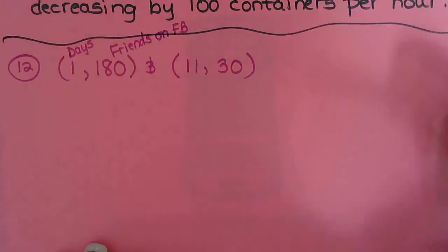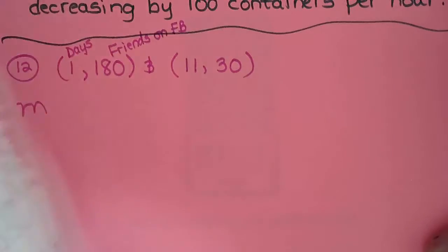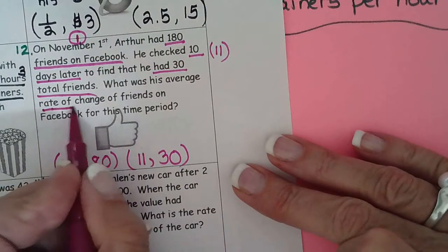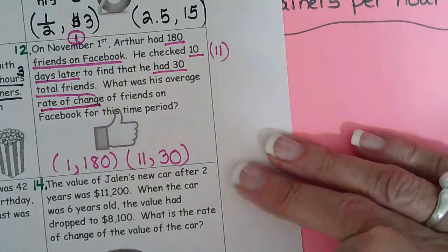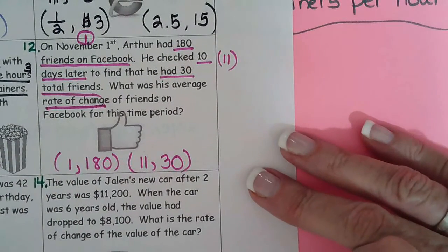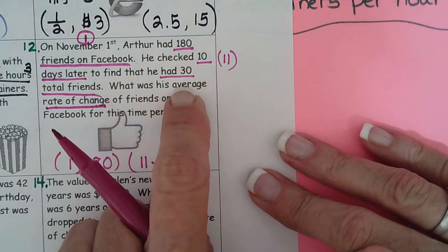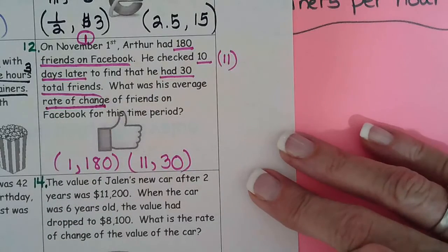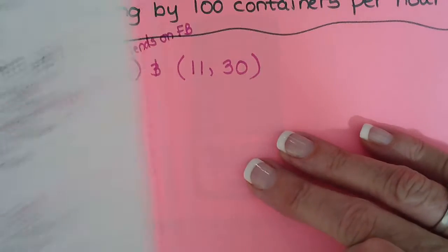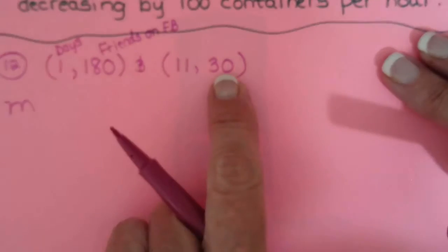Okay, so find the rate of change. So do you think the rate of change is going to be positive or negative? Is the value going up or down? Down, right? So I bet this is going to be a negative slope, too. So when something's going down, it's a negative slope, like the pile of popcorn containers was going down. His friends are going down.